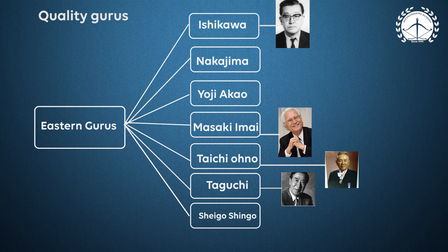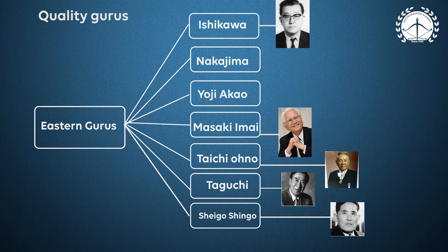Taguchi gave the concept of the quality loss function, which is a parabolic curve. Shigeo Shingo gave the concept of SMED — Single Minute Exchange of Dies. 'Die' is a manufacturing term, but it is applicable to any sector. For example, the changeover time in a Formula 1 race is less than a minute; the objective for any changeover is supposed to be less than 10 minutes — single digit, they say.